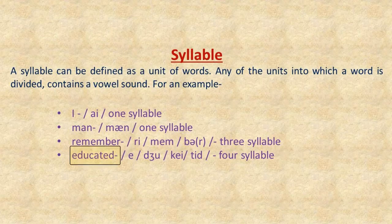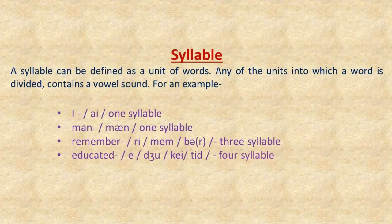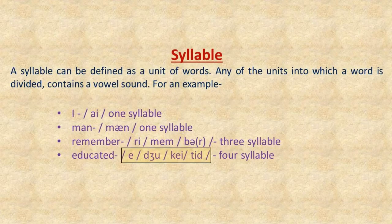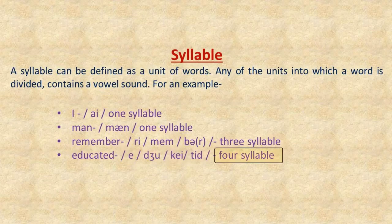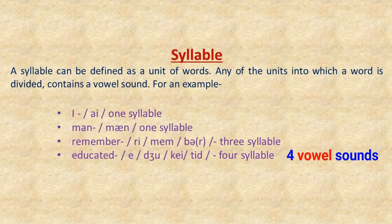The word 'educated' is made up of four syllables — it is divided into four units. The four vowel sounds are: A, U, A, E. So 'educated' is made up of four syllables, meaning four units of vowel sounds.